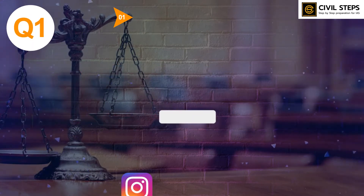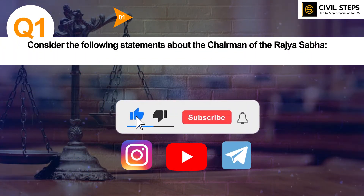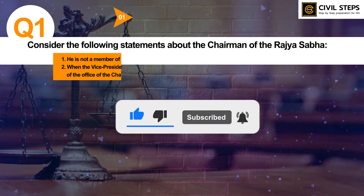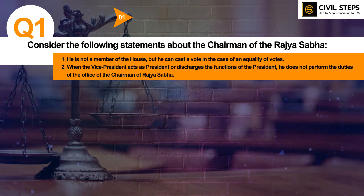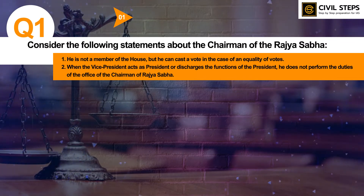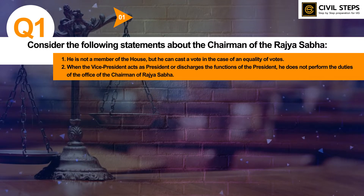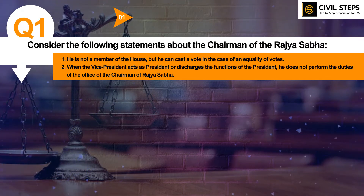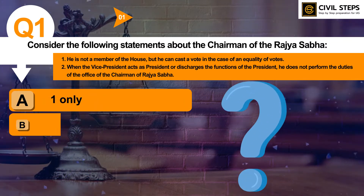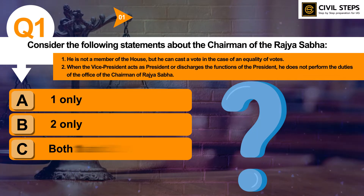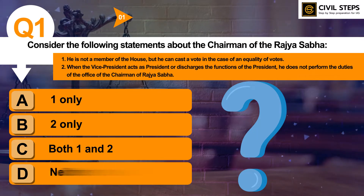The first question is: consider the following statements about the Chairman of the Rajya Sabha. First, he is not a member of the House but he can cast a vote in the case of an equality of votes. Second, when the Vice President acts as President or discharges the functions of the President, he does not perform the duties of the Office of the Chairman of Rajya Sabha. Which of the statements given above is or are correct? Option A: 1 only. B: 2 only. C: both 1 and 2. D: neither 1 nor 2.